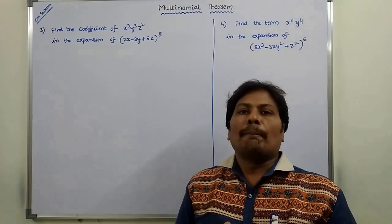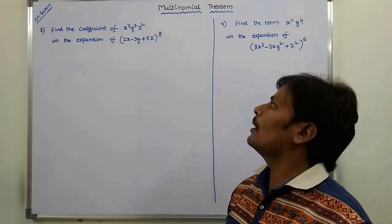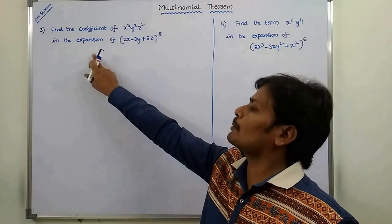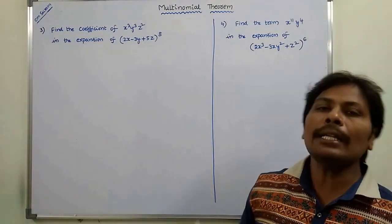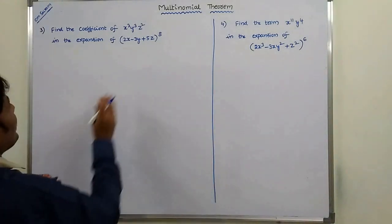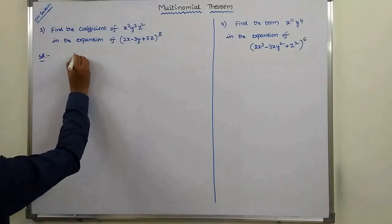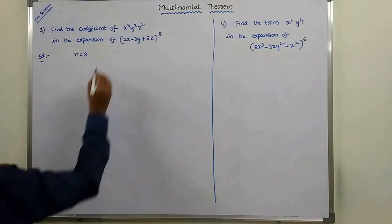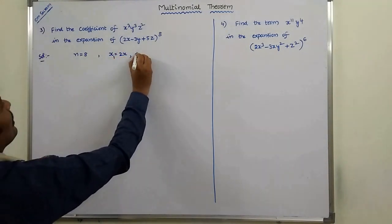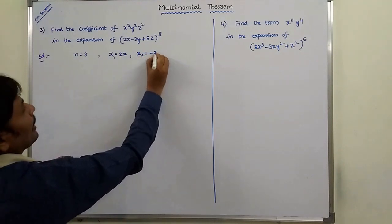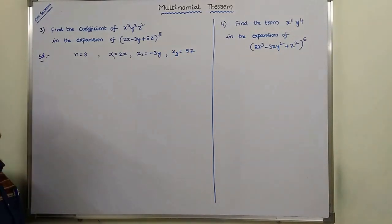Next problem in multinomial theorem: find the coefficient of x cube, y cube, z square in the expansion of (2x minus 3y plus 5z) whole power 8. Here n is equal to 8, x1 is equal to 2x, x2 is equal to minus 3y, x3 is equal to 5z.